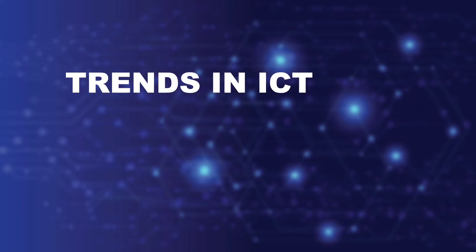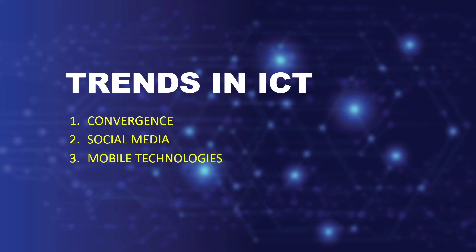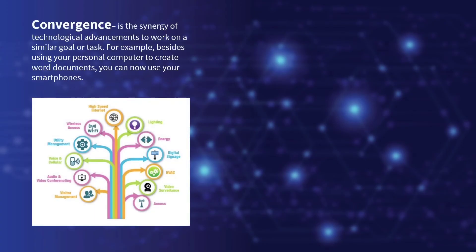Now let's talk about the trends in ICT. The trends in ICT include convergence, social media, mobile technologies, and assistive media. First, convergence is the synergy of technological advancements working toward a similar goal or task. For example, besides using a personal computer to create word documents, you can now use your smartphone. You no longer need a laptop to edit videos or pictures because you can now do it on your cell phone or tablet.